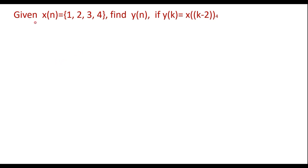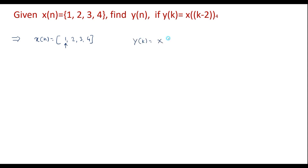Consider an example on DFT. Given x(n) = {1, 2, 3, 4}, find y(n) if y(k) is equal to x((k-2))₄. Here x(n) is a discrete sequence with values 1, 2, 3, 4, where x(0)=1. The expression y(k) = x((k-2))₄ is a circular shift equation.